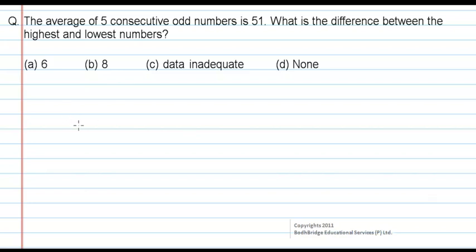Options we have: 6, 8, data inadequate, none. Here, we don't know the five consecutive odd numbers, but we know the average of those five consecutive odd numbers. And we need to find the difference between the highest and lowest numbers.